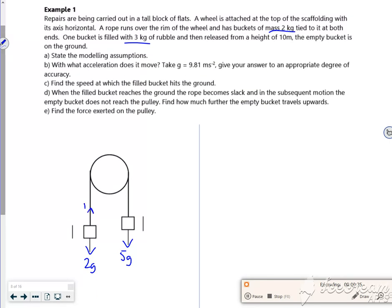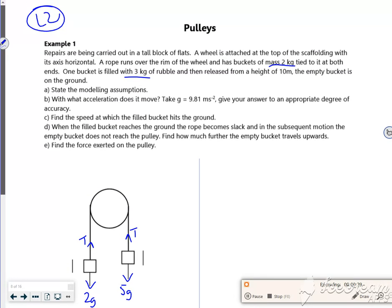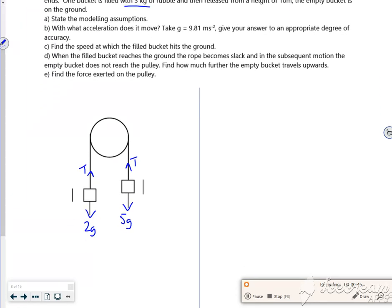It's one string so it's one tension. So it says it's released from a height of 10 metres. So I'm going to assume that the 5g is going to take it down, which means the 2g is coming up.